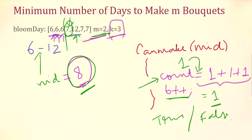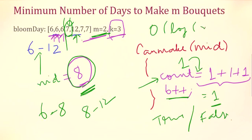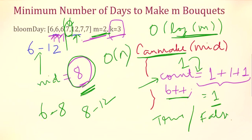If we can make m bouquets within mid days, we fix the search space from 6 to 8 and try to reduce the number of days, checking again whether we can make m bouquets. If not, we fix the range from 8 to 12, increment the days, and check again. Since binary search reduces the search space by half every time, it requires O(log(max value in array)) iterations, and for every mid value we call canMake which takes O(n). So the overall time complexity is O(n log m).